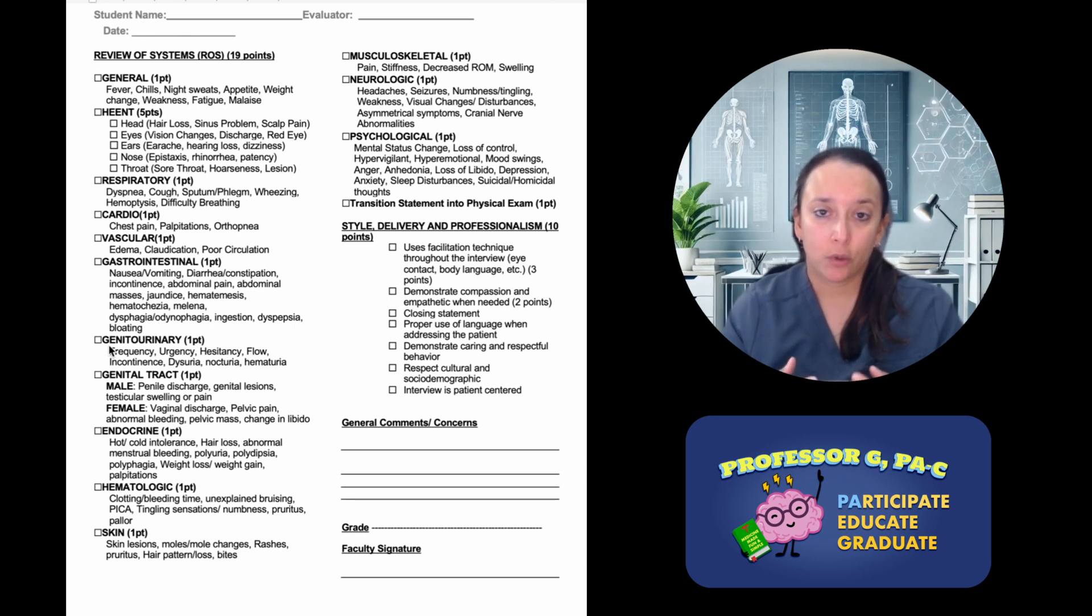One way that I've tackled it before is I try to start from the head and work my way down. Start with the general, then I tackle the HEENT because it's up here. Then I might do the neck and endocrine, then I might do the chest - respiratory, cardio, maybe vascular. Moving down I might do the GI, renal, and so forth. You might try it that way. There's not one quick easy way, but I do have a tip or trick for you.